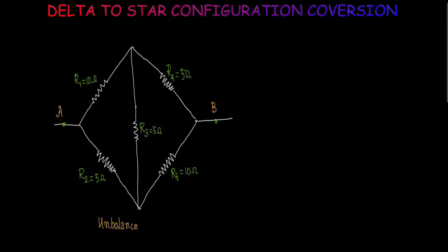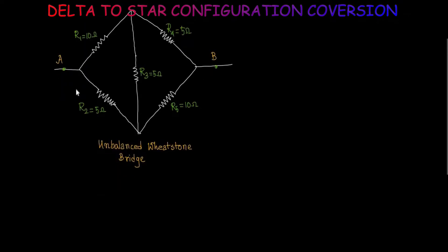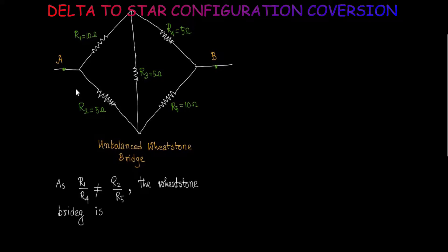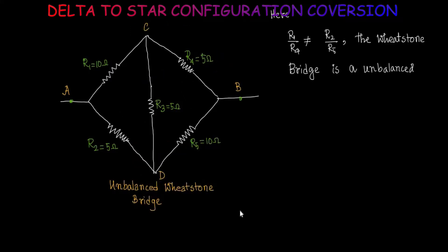To form an unbalanced Wheatstone Bridge in which 5 resistors R1, R2, R3, R4 and R5 are connected between the two terminals A and B. For this unbalanced Wheatstone Bridge, R1 by R4 is not equal to R2 by R5 — the ratio of resistances above the middle resistance R3 is not equal to the ratio of resistances below R3. That is why this Wheatstone Bridge is known as an unbalanced Wheatstone Bridge.